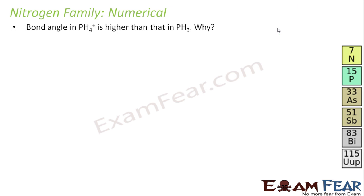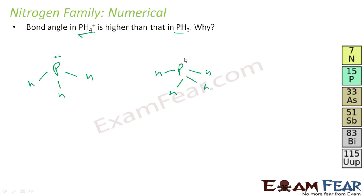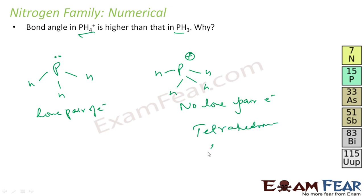The bond angle of PH4+ is greater than that of PH3. In PH3, the phosphorus has a lone pair of electrons. In PH4+, there is a positive charge and no lone pair of electrons. Without a lone pair, PH4+ has a tetrahedral shape with a bond angle of 109.5°. In PH3, the lone pair pushes the hydrogens down, reducing the bond angle below 109.5°.